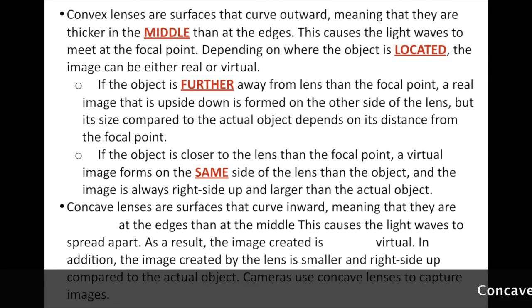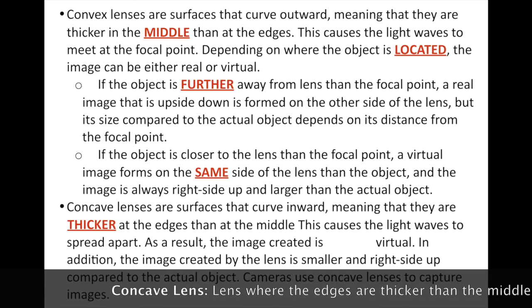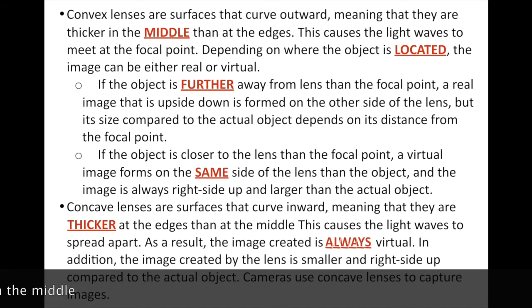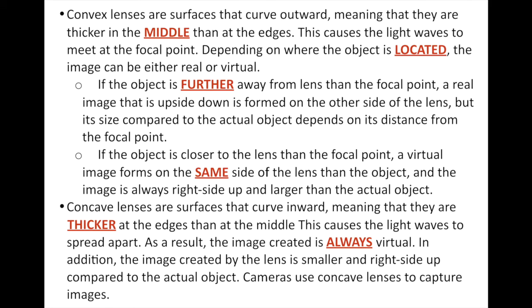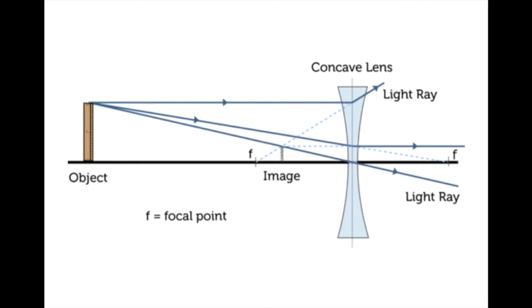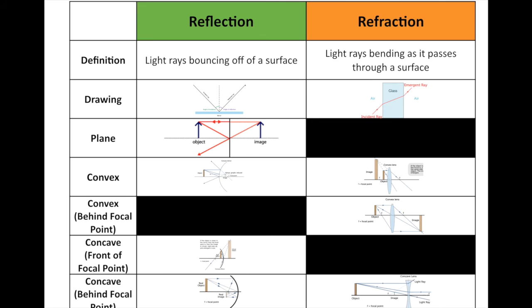Finally, concave lenses are surfaces that curve inward — thicker at the edges than in the middle. This causes light waves to spread apart. As a result, the image created is always virtual because the light rays never actually meet. The image is also smaller and right side up compared to the actual object. Cameras use concave lenses to capture images, and the combination of lenses is what allows us to zoom in or out.